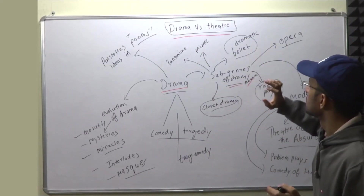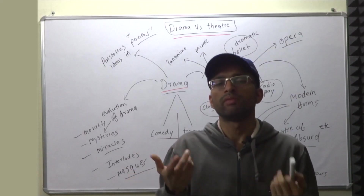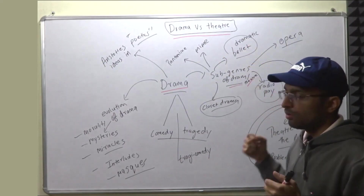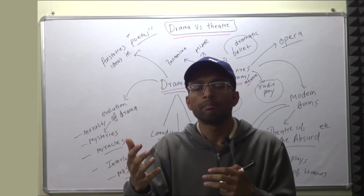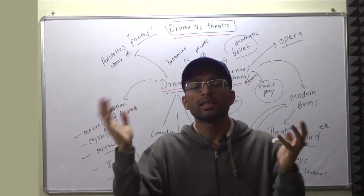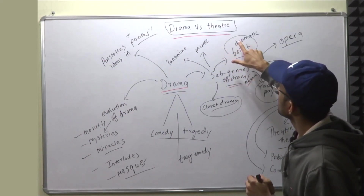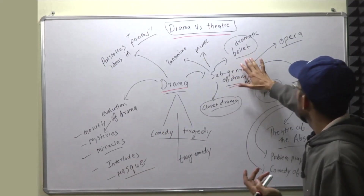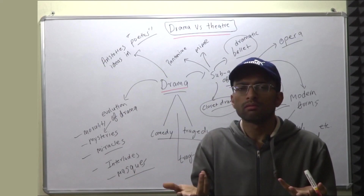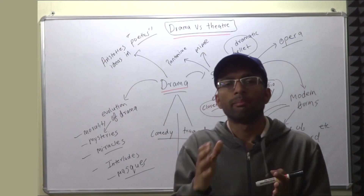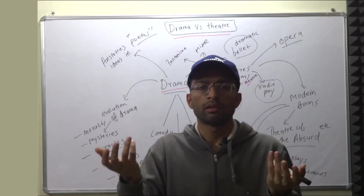Then we have something called Dramatic Ballet. When we read the word 'ballet,' dance comes to mind. There is something called Dramatic Ballet where dance conveys emotions and expressions — something is communicated via dance. Even in India there are examples where dance is a form of communication, not just for enjoyment. That is what Dramatic Ballet is, and it can be considered a type of theatrical performance. You should also know about Opera, where music is involved — mostly songs are sung. A good example of Ballad Opera is the famous play by John Gay called Beggar's Opera.